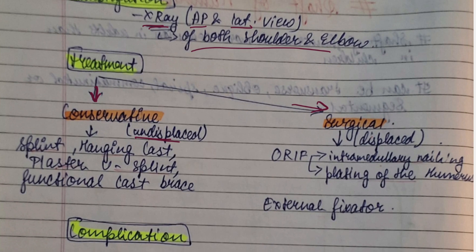Splint, hanging cast, plaster, U-splint, functional cast brace should be used. For surgical, that is for displaced fracture.